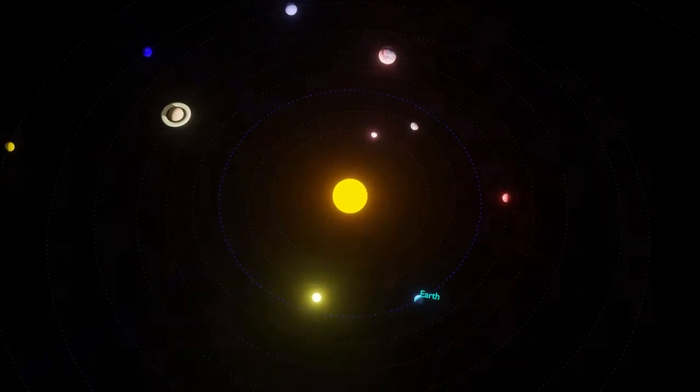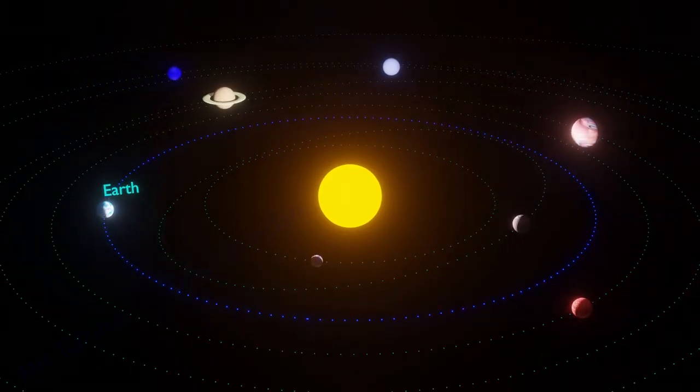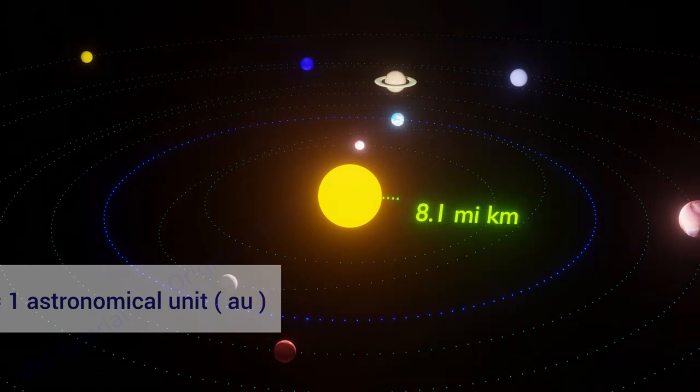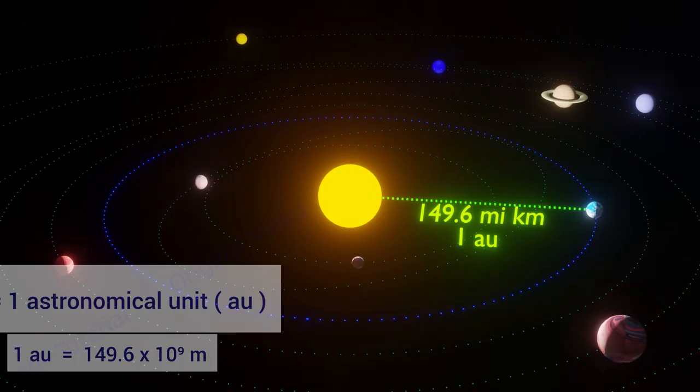To realize 1 parsec and its mathematical calculations, consider our solar system. The average distance between the sun and the earth is called an astronomical unit. Its accepted value is 149.6 million kilometers.